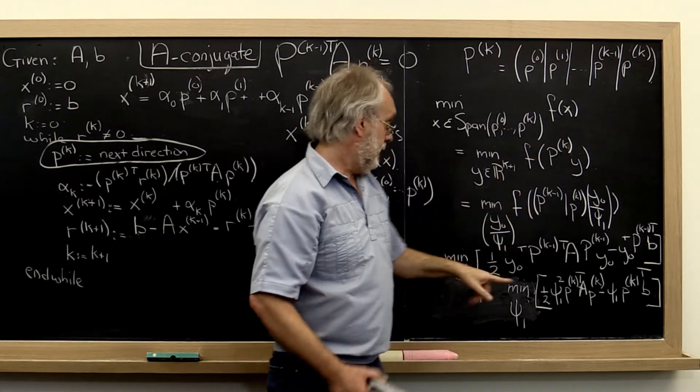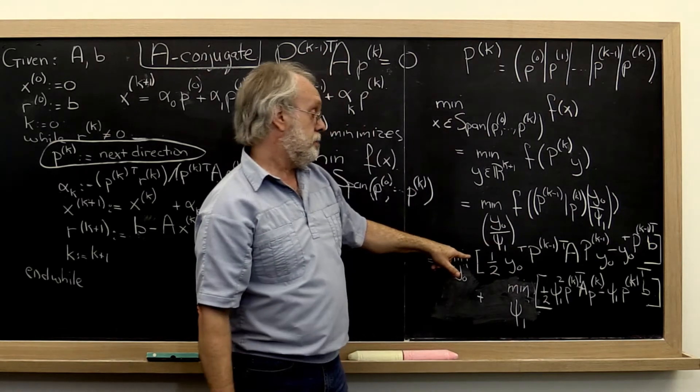So it is x_k that minimizes this expression right here.